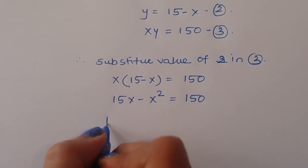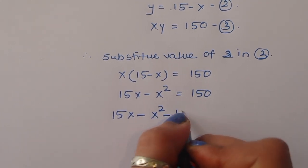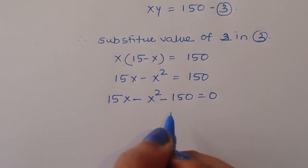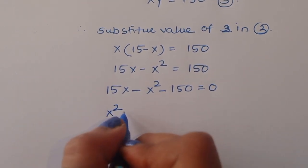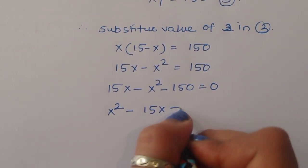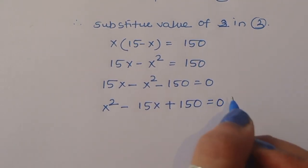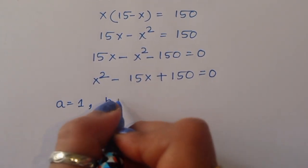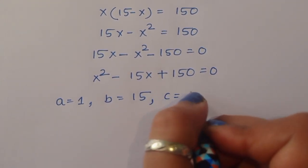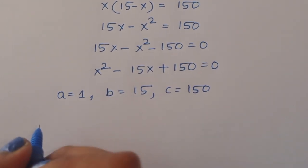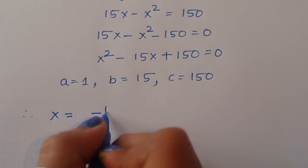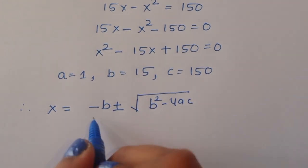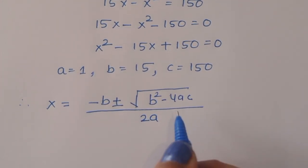We rewrite as 15x minus x squared minus 150 equals 0. Multiplying through by minus 1 gives x squared minus 15x plus 150 equals 0. Now the coefficients are: a equals 1, b equals minus 15, and c equals 150. We apply the quadratic formula: x equals minus b plus or minus square root of (b squared minus 4ac) all divided by 2a.